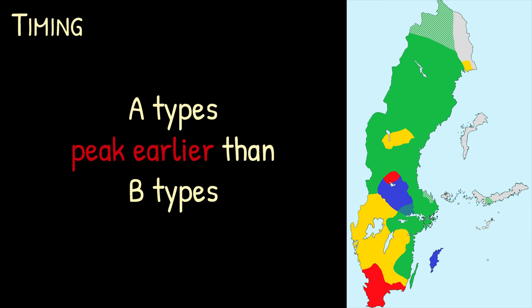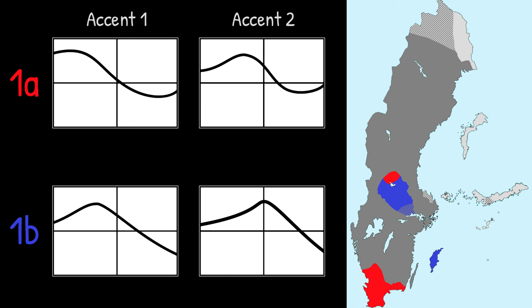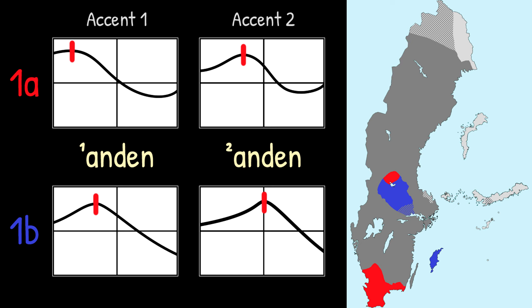As for the difference between type 1a and 1b, and between 2a and 2b, this is all about timing. Relative to each other, the A-type accents have their peak in pitch earlier than the B types. Here we have type 1a and 1b — both being type 1s, they have a single peak in pitch in both Accent 1 and 2. The difference is that the peaks in type 1a come earlier than the ones in type 1b, and that is in fact the sole distinguishing factor between them. Let's listen: 'andan', 'andan', 'andan', 'andan'.